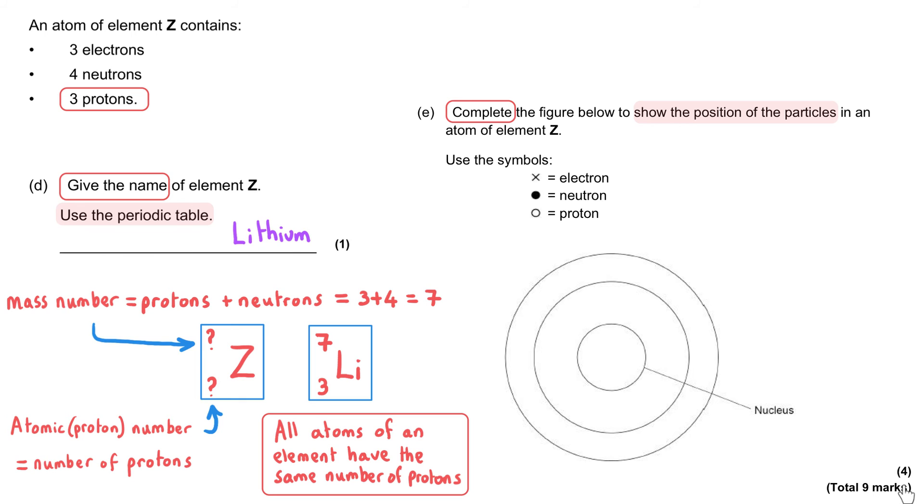And we've been given some particular symbols that we need to use for each of the particles. There are four marks available here and there are only three types of particles. So that means one of them must be worth two marks. First of all, we need to remember that the neutrons and the protons are found in the nucleus and the electrons are found in shells. And the nucleus is this circle at the center of the atom. Currently, it doesn't have anything in it.